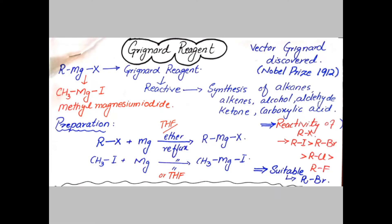Our today's topic is Grignard reagent. Grignard reagent was discovered by Victor Grignard and he was awarded a Nobel Prize in 1912. Grignard reagent is actually alkyl magnesium halide. If R represents an alkyl or any aryl group, and if the R is a methyl group, so the name will be methyl magnesium.